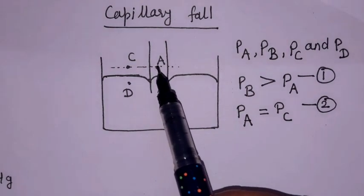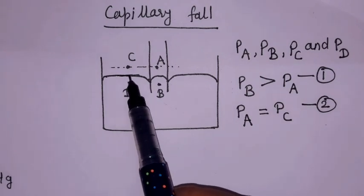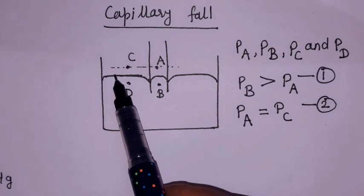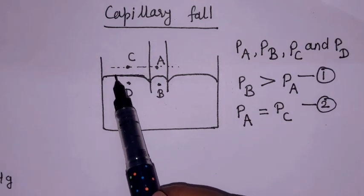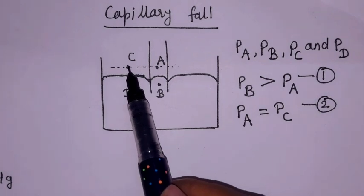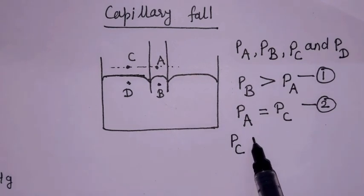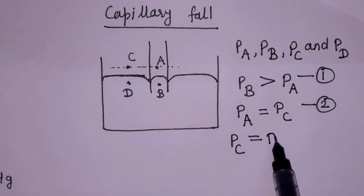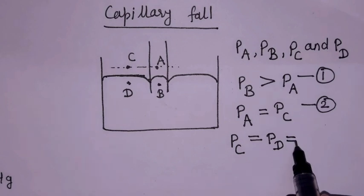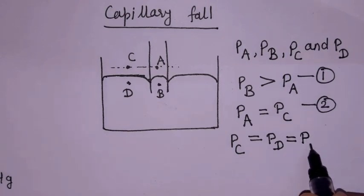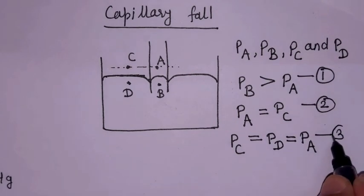Comparing points C and D, the surface between them is a plain liquid surface, so there is zero pressure difference. Therefore pressure at C equals pressure at D. By Reason 2, pressure at D also equals pressure at A — this is Reason 3.